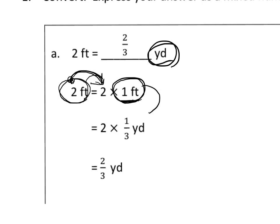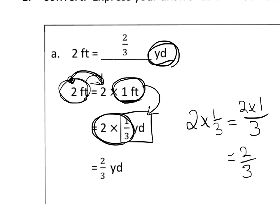We know that one foot is equal to a third of a yard, and now we do two times a third, and we know how to do that. Two times a third is equal to two times one over three, and that's equal to two thirds yards, so the answer is two thirds yards.